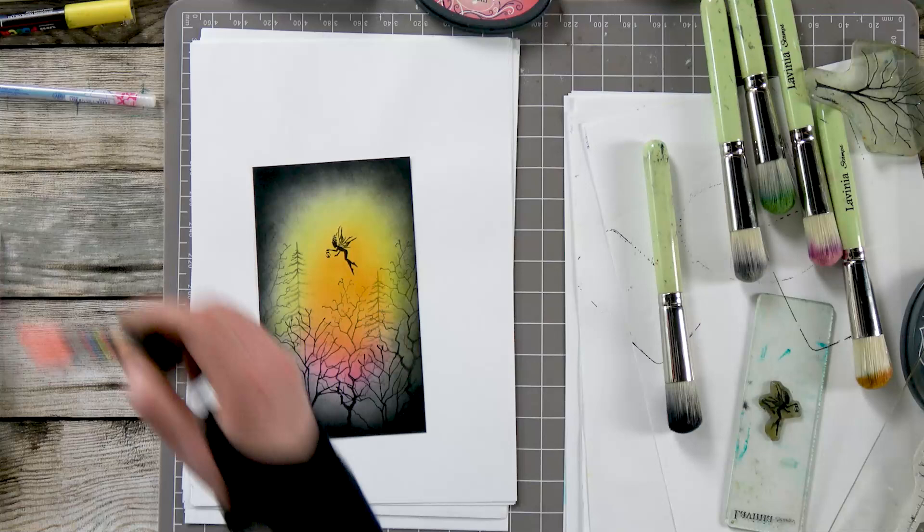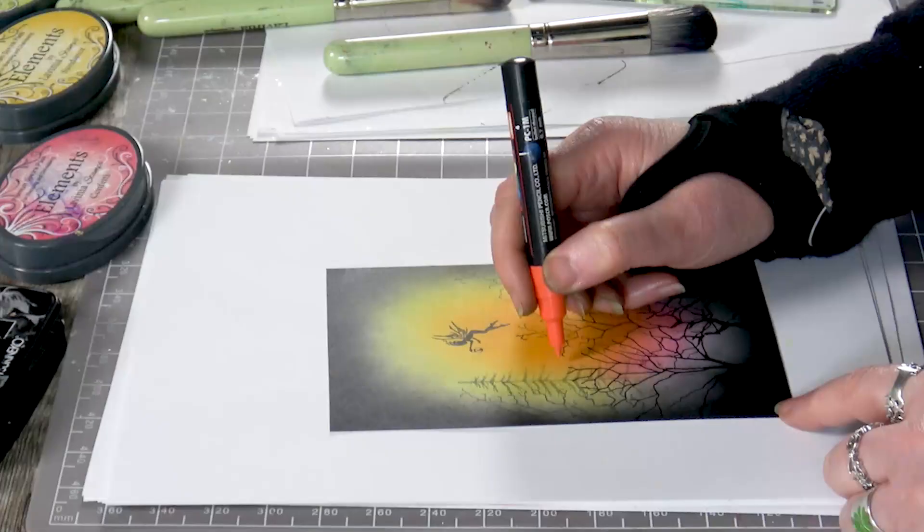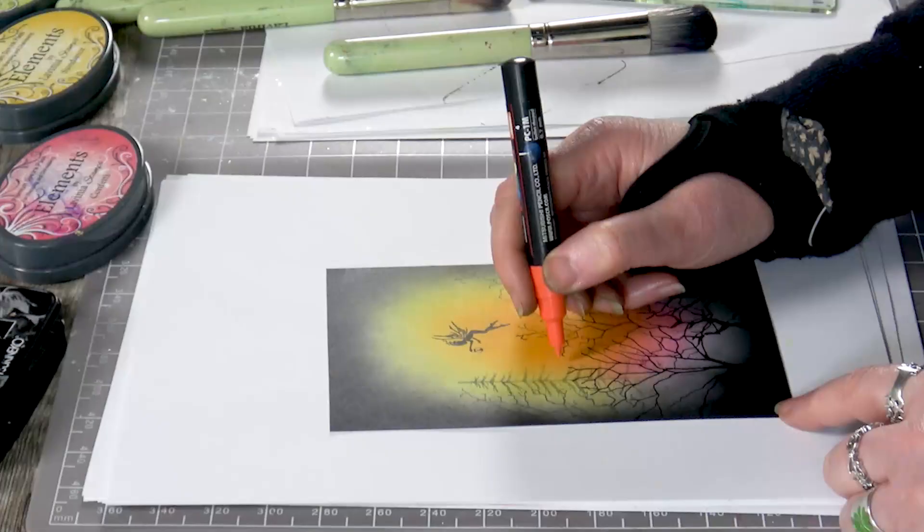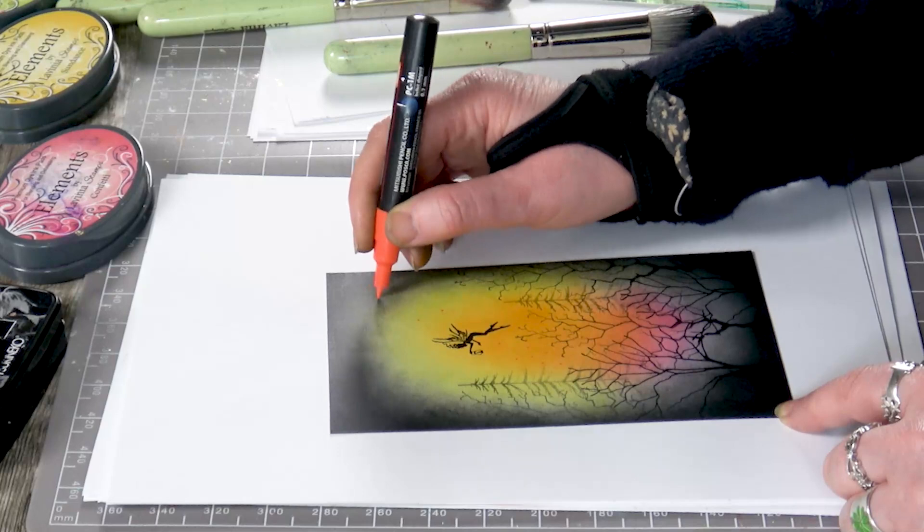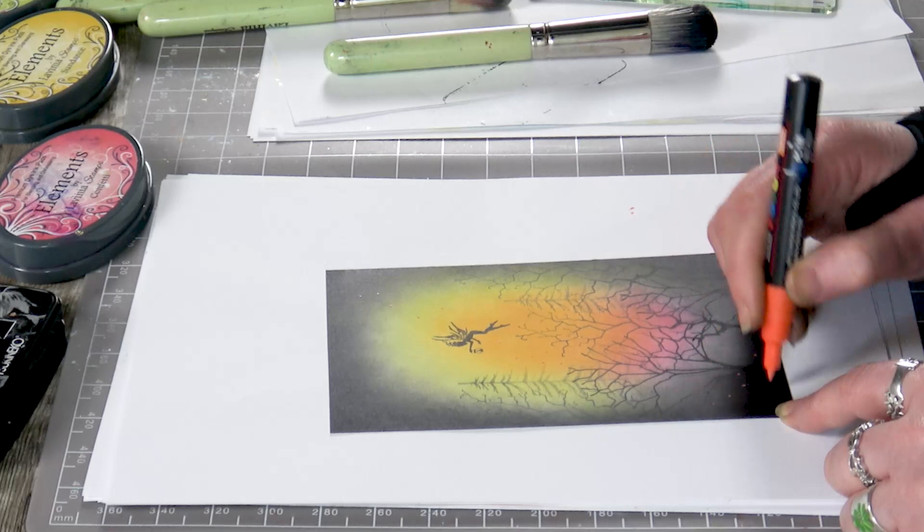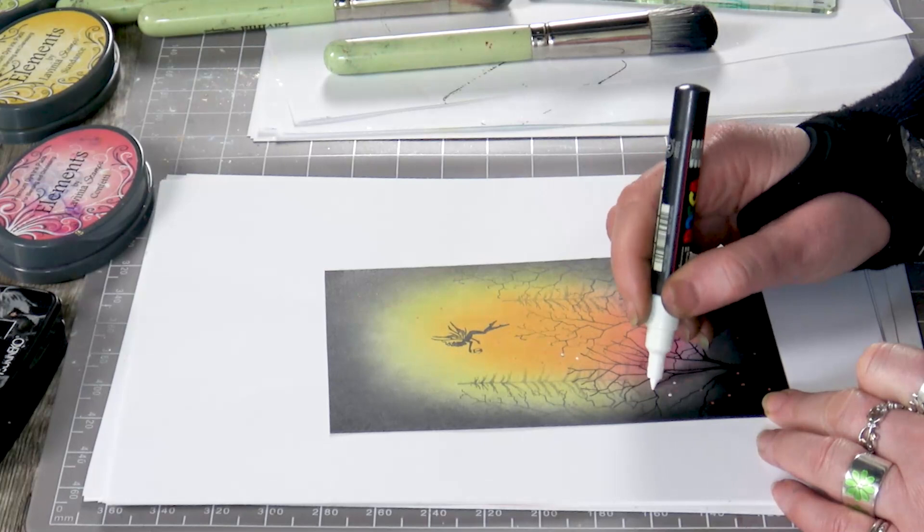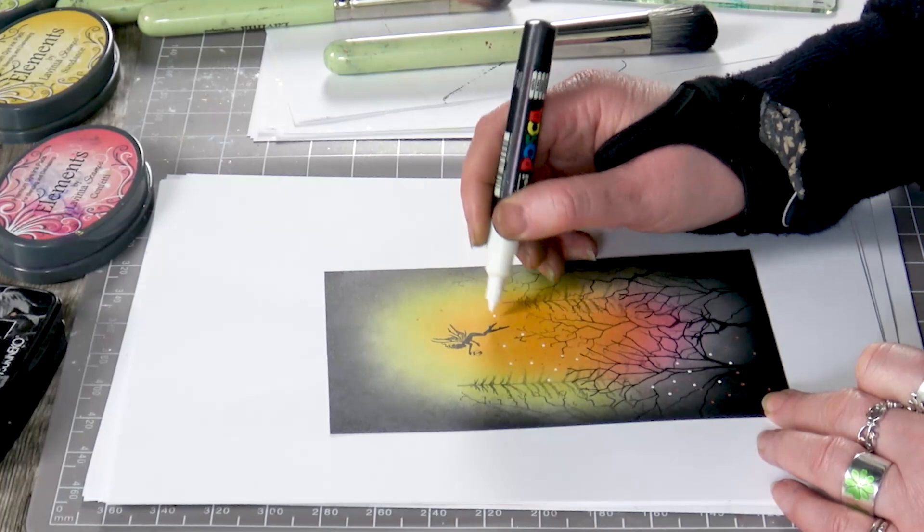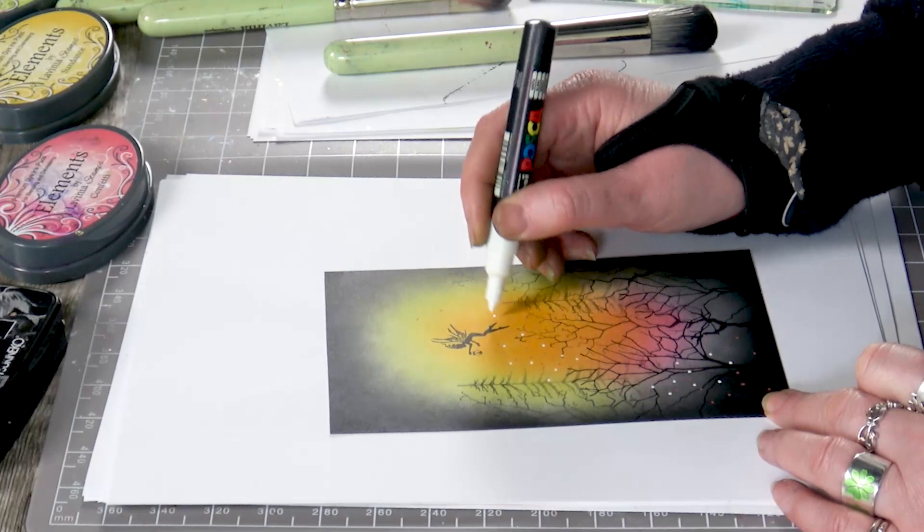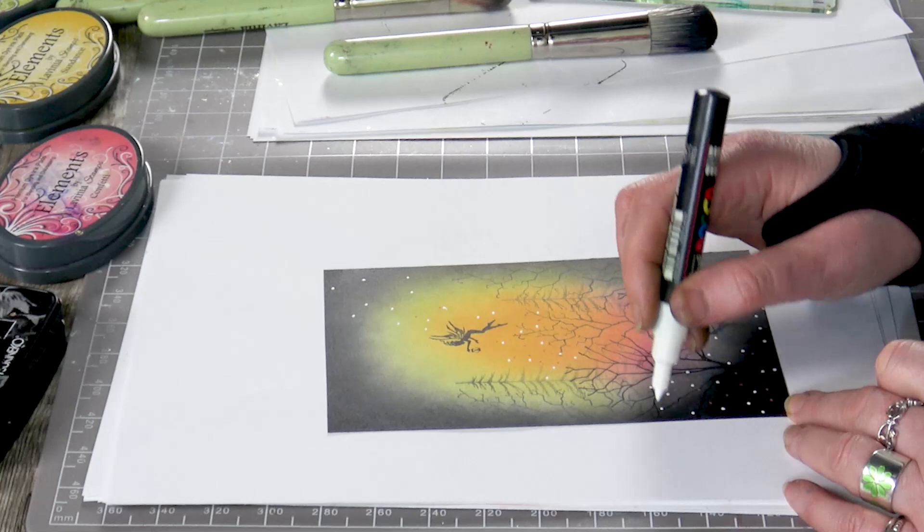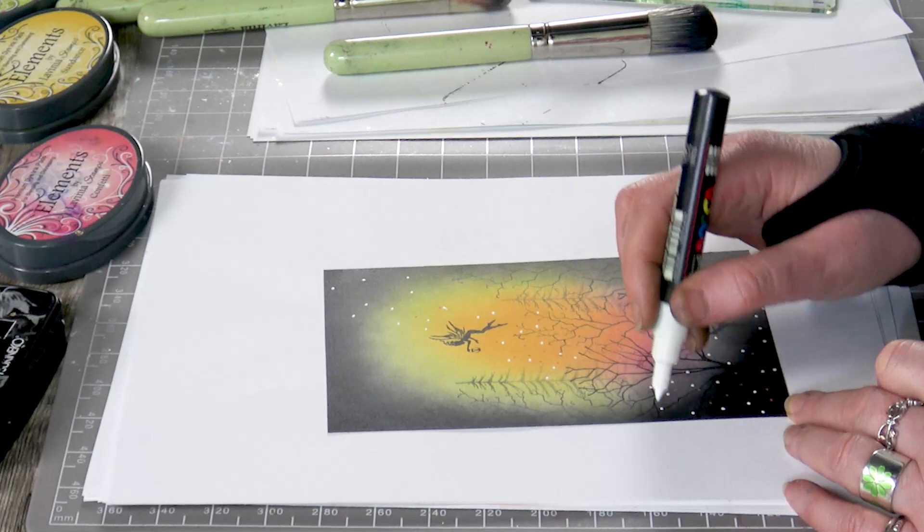So now we're going to use some Posca pens just to dot around. We've got the white here as well. I love how these Posca pens stand out so well against that dark background.